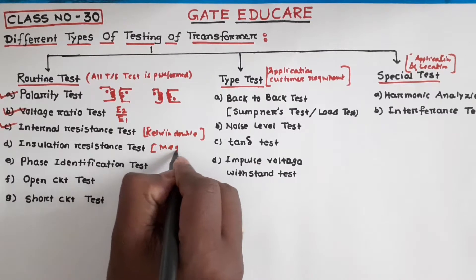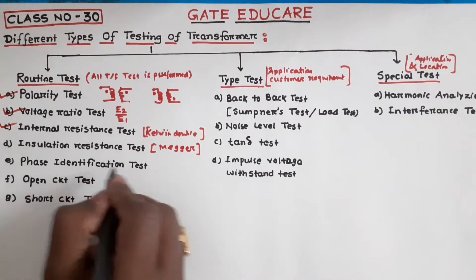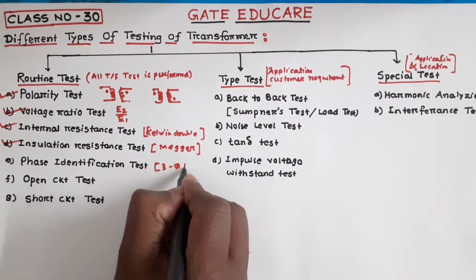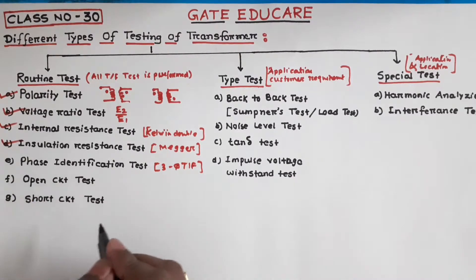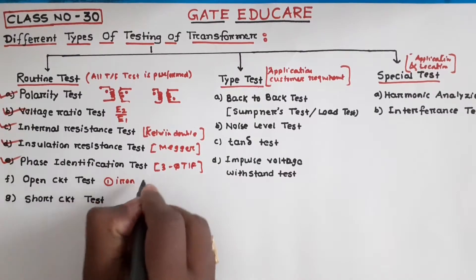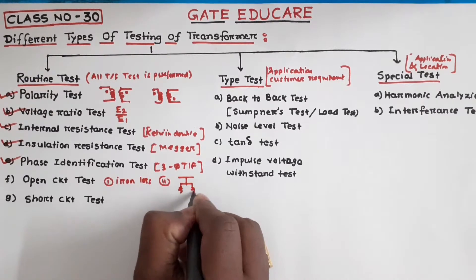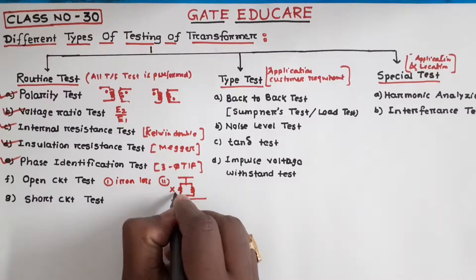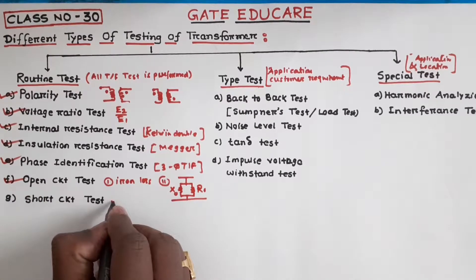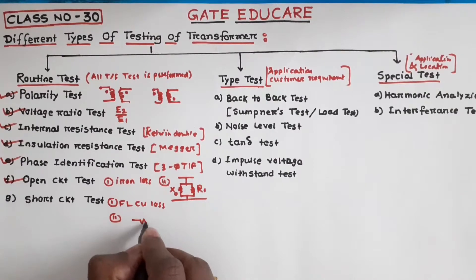Next, measurement of insulation resistance test. With the help of a Megger test, the insulation between the windings is measured. Phase identification test: the phase identification test is generally performed on a three-phase transformer to determine the phase sequence — whether it is RYB or RBY. Open circuit test: with the help of the open circuit test, mainly iron loss and shunt branch parameters R0 and X0 are measured.